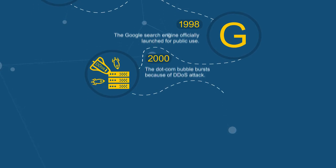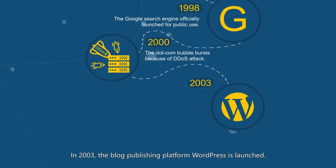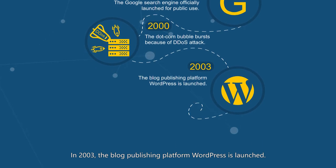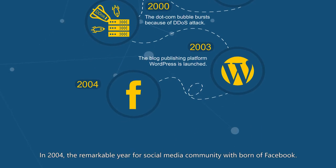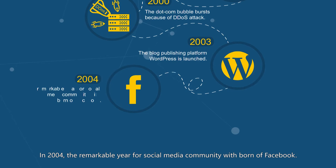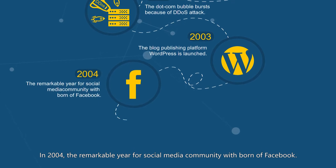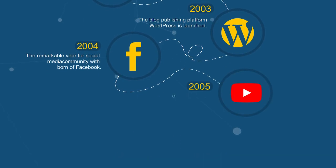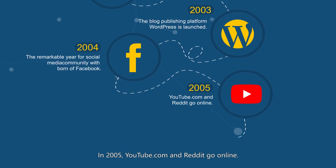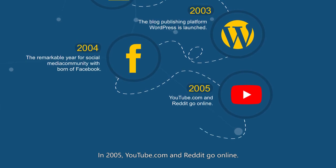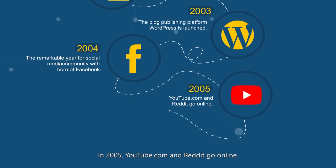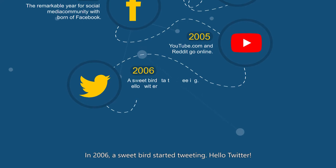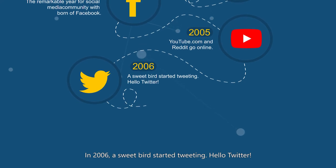In 1998, the Google search engine officially launched for public use. In 2000, the dot-com bubble burst because of DDoS attacks. In 2003, the blog publishing platform WordPress was launched. In 2004, it was a remarkable year for social media with the birth of Facebook.